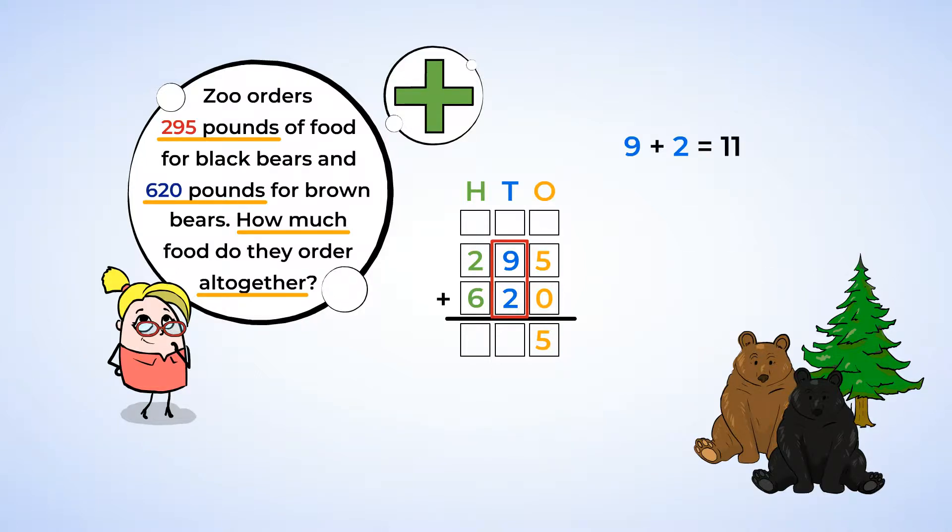We can put that extra one on top of the hundreds column like this. So, we had eleven tens and regrouped ten of them. That leaves us with one ten. Put a one in the tens place. Add the hundreds place. There's the two and the six, plus the one from regrouping. One plus two is three. Three plus six is nine. Put a nine in the hundreds place.